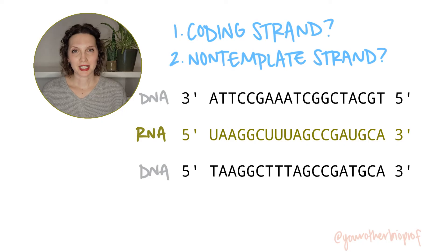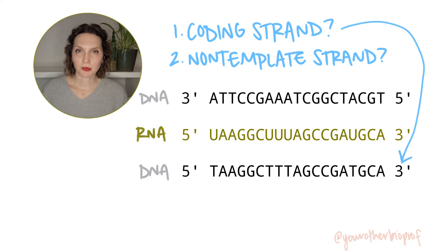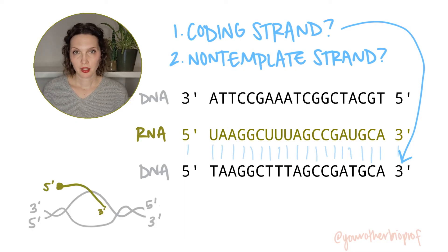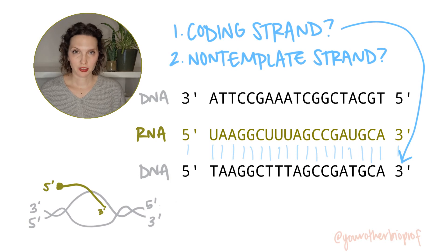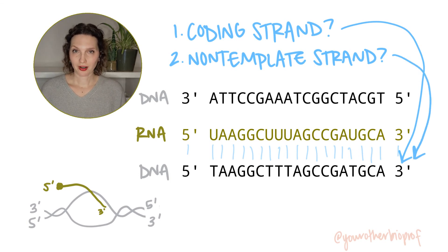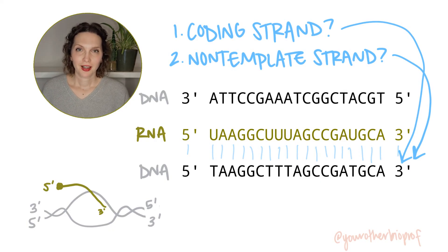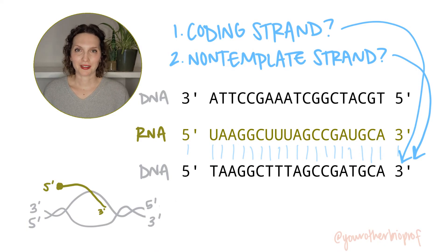The coding strand is the DNA strand on the bottom. It has the same sequence as the RNA that was produced, except the T's in the DNA became U's in the RNA. We can also call the coding strand the sense strand or the non-template strand — so that's the bottom one as well. A little bit of practice will help you keep the terms straight.